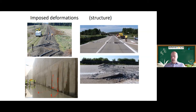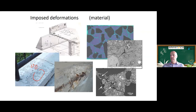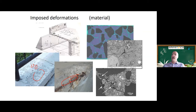Imposed deformations also occur at the material level. Frost damage can cause pieces of material to spall off. Corrosion causes expansion of the rebars, which induces deformation inside the material and spalls the concrete cover. ASR reactions cause the aggregates to expand due to a gel-forming reaction, creating small cracks that reduce stiffness and strength of the material.